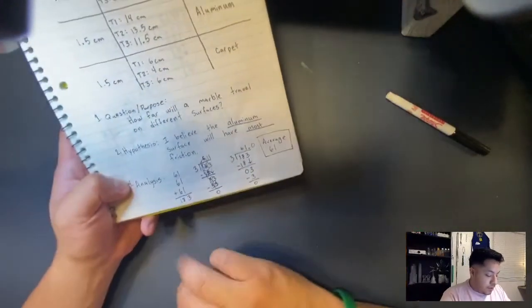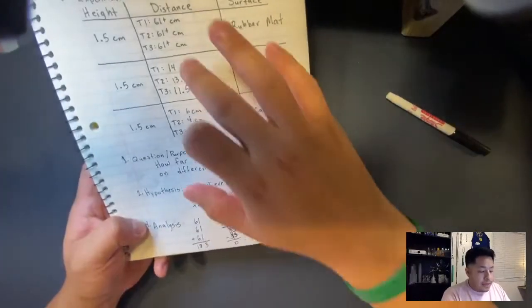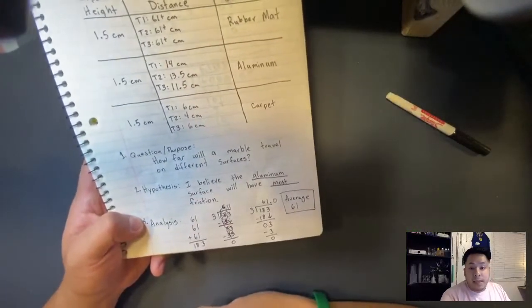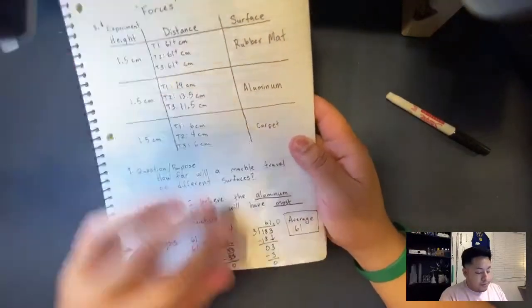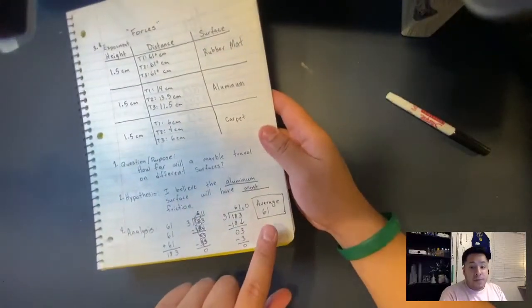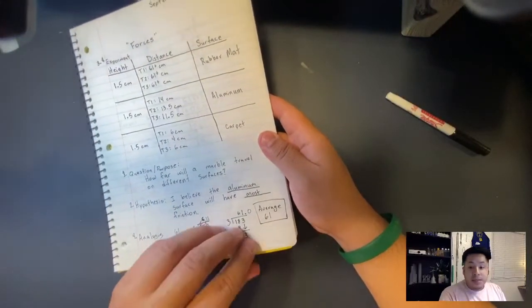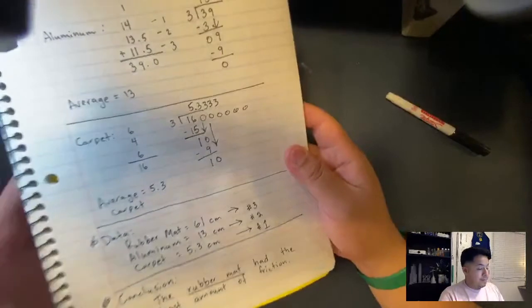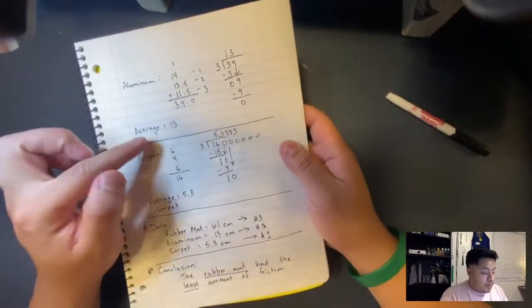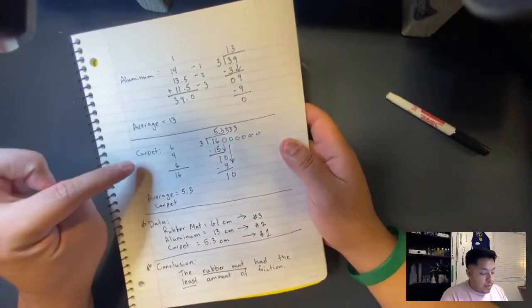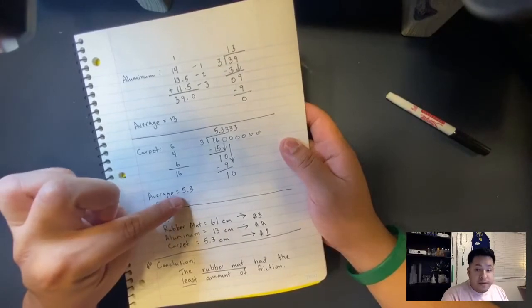Added these three up, these three up, and then I divided by three for each one. The average for the rubber mat was 61. For aluminum, the average was 13. And then for carpet, the average was 5.3.